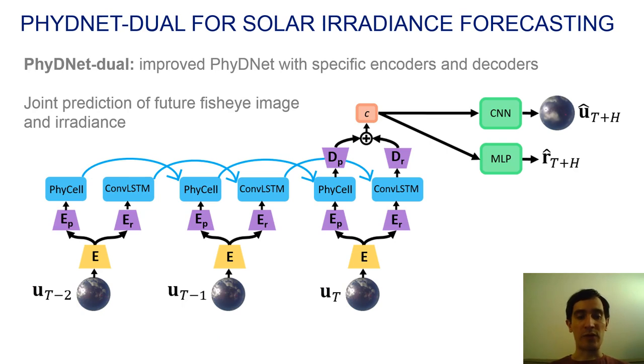Now, we present our contribution to the solar irradiance forecasting problem. We propose PhyDNet-DRAWL. It is a slightly improved version of PhyDNet with specific encoders and decoders for both branches. We use this model to encode a sequence of fisheye images up to time T into a context vector C.